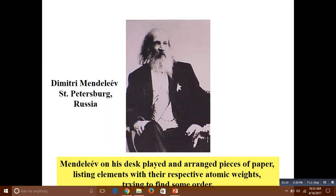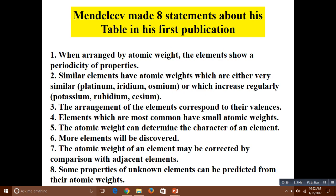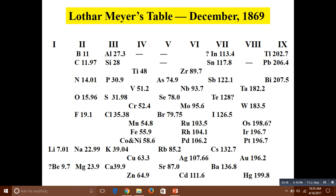However, there were objections that several elements were arranged out of place. Mendeleev's periodic table arranged the elements in order of increasing atomic mass. He arranged the elements into periods and groups.